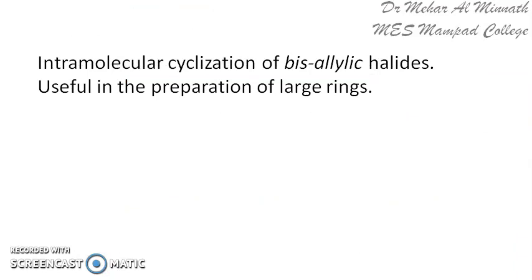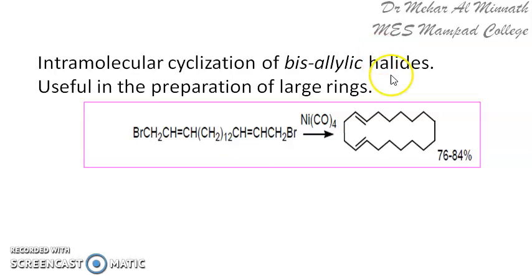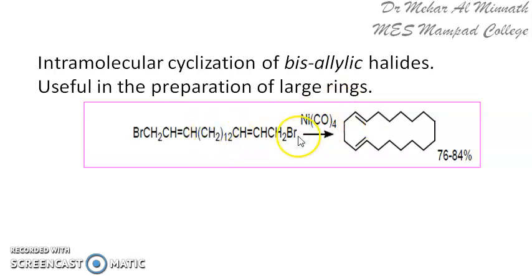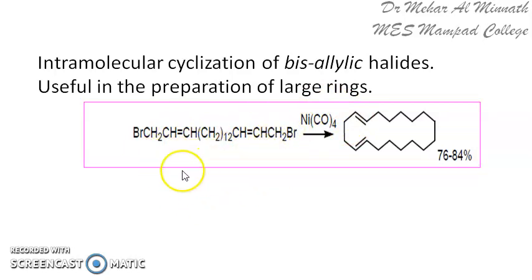We can even carry out intramolecular cyclization. To prepare large rings we can use nickel tetracarbonyl with an allyl halide. When the allyl halide has two allyl systems within the molecule, we can carry out intramolecular cyclization. Here you have one allyl system on one end and another allyl system on the other end of a long 12-carbon chain. Treating this long-chain compound with nickel tetracarbonyl gives you a ring system where the two allyl systems couple via intramolecular cyclization.